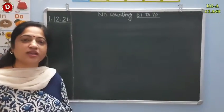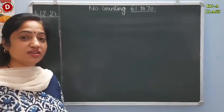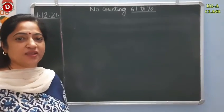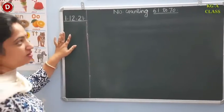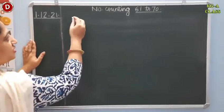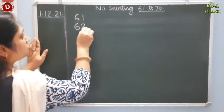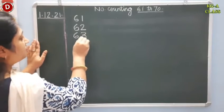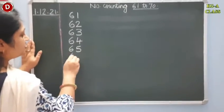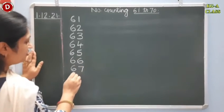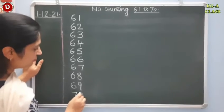Children, today I will teach you to write numbers from 61 to 70. First, I am going to write on the board in series. So watch it carefully and speak after me. This is today's date. Today is 1st December 2021. Let's write number counting 61 to 70. This is 6, 1, 61. Then comes 62, 63, 64, 65, 66, 67, 68, 69 and then 70.